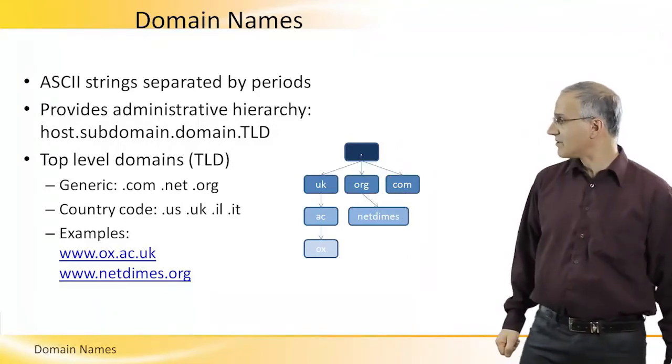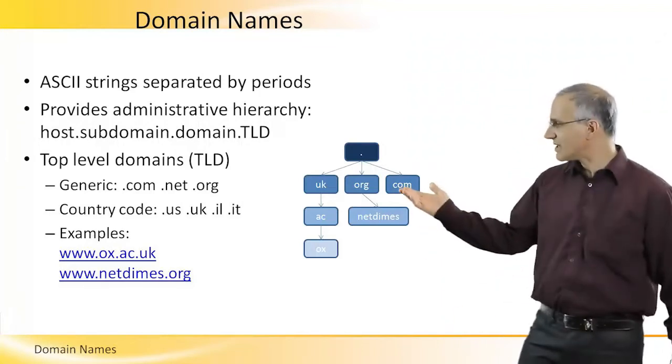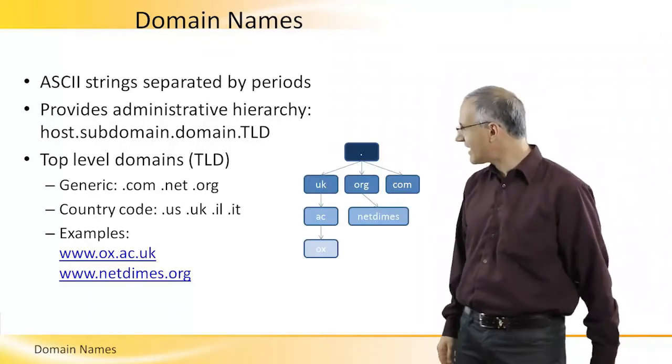This can be either a generic domain like .com, .net, or .org, or it can be a country code like .us for the US, .uk for UK, .il for Israel, .it for Italy, etc.